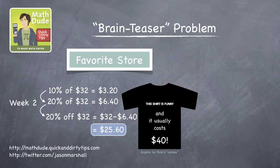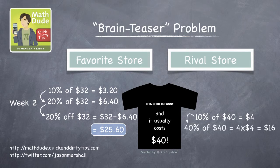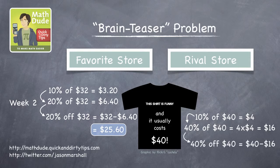Okay, how about your favorite store's rival? What's their on-sale price? Well, they offer a 40% discount off the original price of $40. 10% of $40 is $4, and 40% is four times this, or $16. So the final sale price at the rival store is $40 minus $16, or $24.